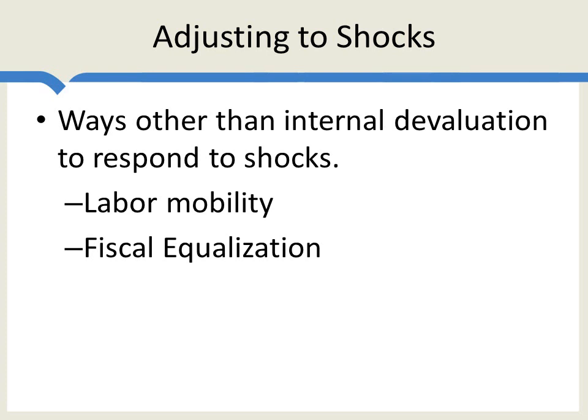Another way of ameliorating shocks is through fiscal equalization — spending money in the part of the common currency area where there's a recession. When Texas goes into a recession because the price of oil falls, it's not very controversial in the United States to spend more on unemployment insurance in Texas. It's much more controversial in the European Union for Germans to spend money on unemployment insurance for Greeks. People in the United States think of themselves as Americans first and Virginians second. In the European Union, they think of themselves as Greeks first and Europeans second. So for both of these reasons — labor mobility and fiscal equalization — it's easier to have a common currency in the United States than across Germany and Greece.